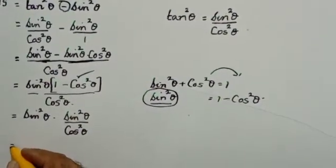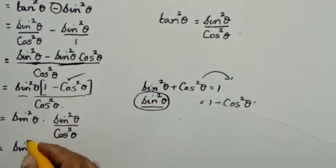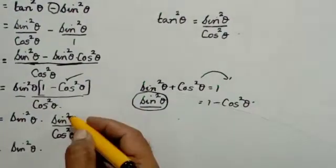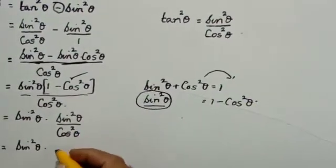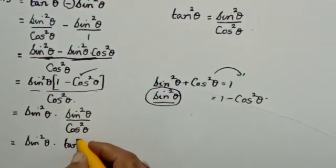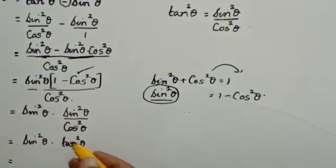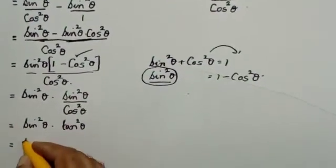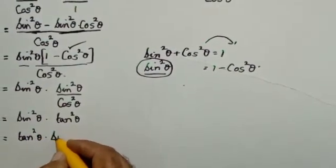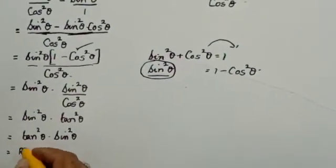Sin squared theta is kept as it is, into sin squared theta by cos squared theta. Sin divided by cos is tangent of theta, so sin squared theta by cos squared theta is tan squared theta. Rearranging the terms, you will have tan squared theta into sin squared theta. And that is what was required — that is the right hand side.